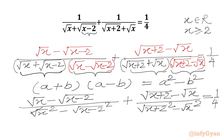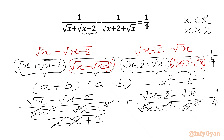Now the square root and square will cancel. For the first denominator, x minus (x plus 2) gives minus 2, so the denominator is 2. For the second part, denominator is (x plus 2) minus x, again cancelling to give 2. So the overall denominator is 2.